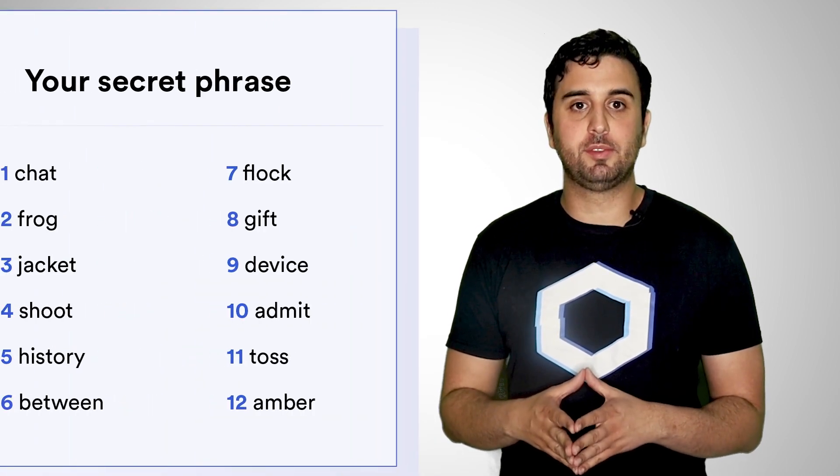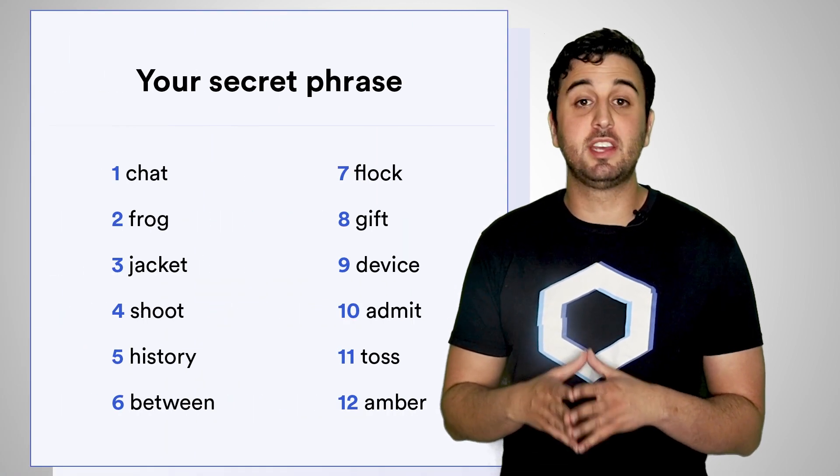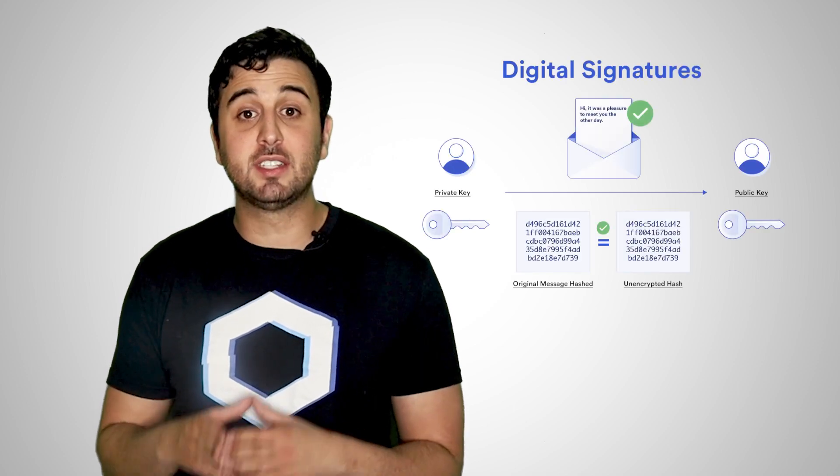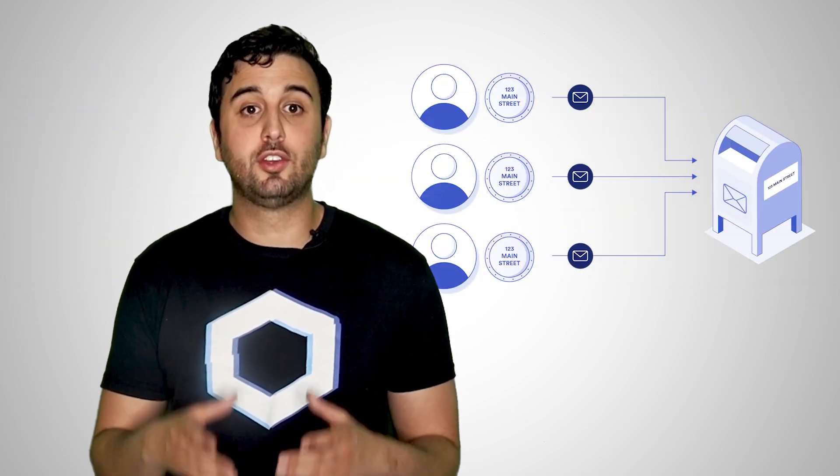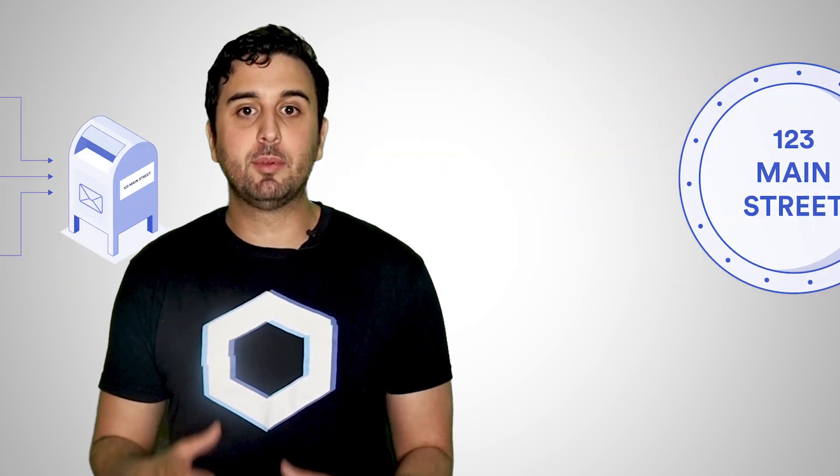Upon setup, wallets will typically provide the user with a random secret phrase. You can use the secret phrase to recover all private and public key pairs within the wallet. Crypto wallets use private keys to sign transactions and public keys to derive an address that represents a user on the blockchain.